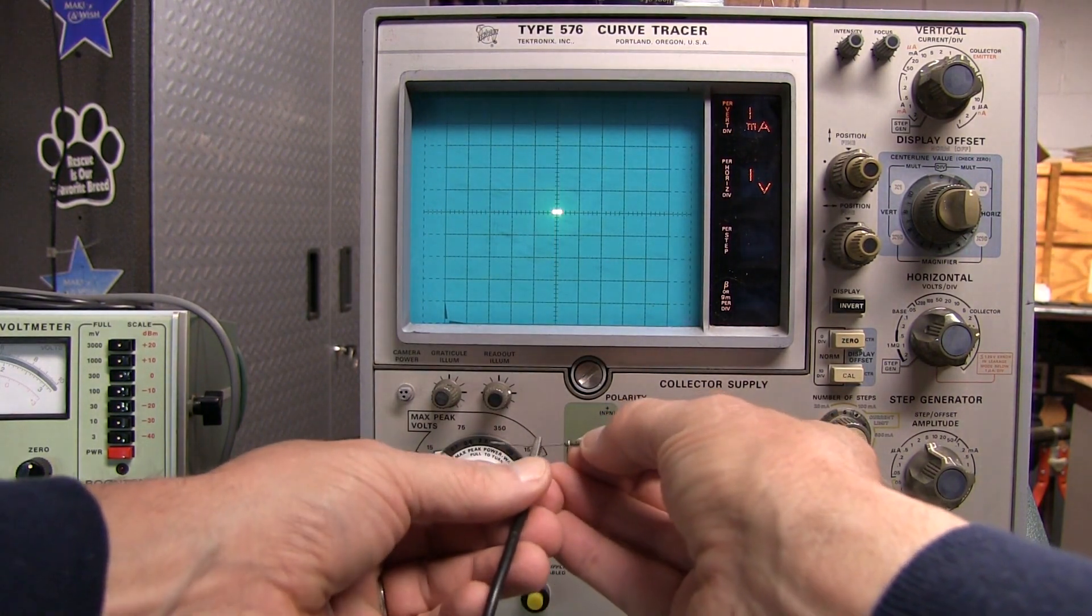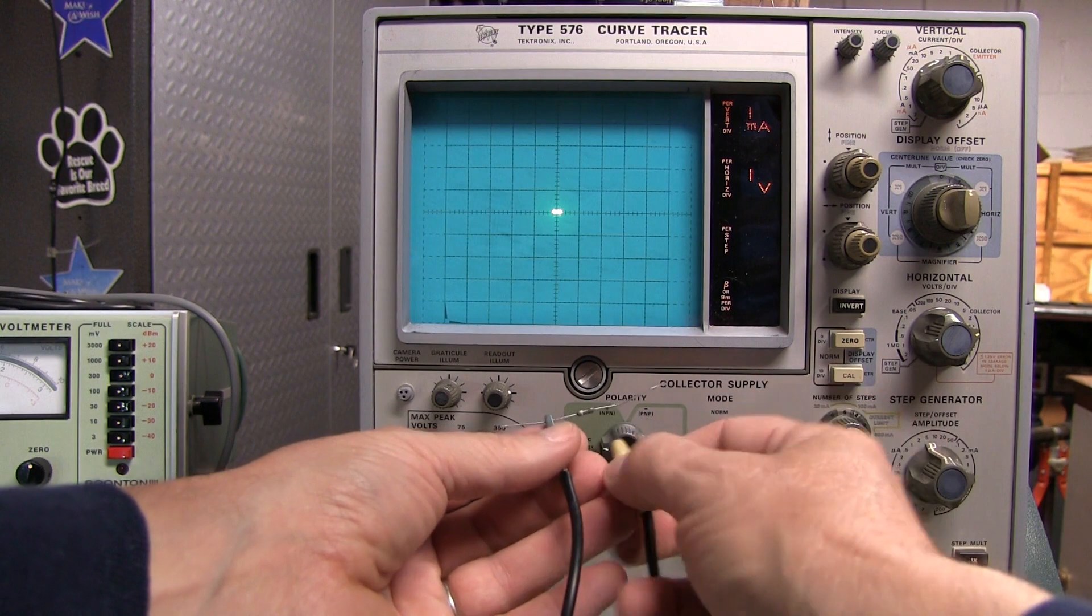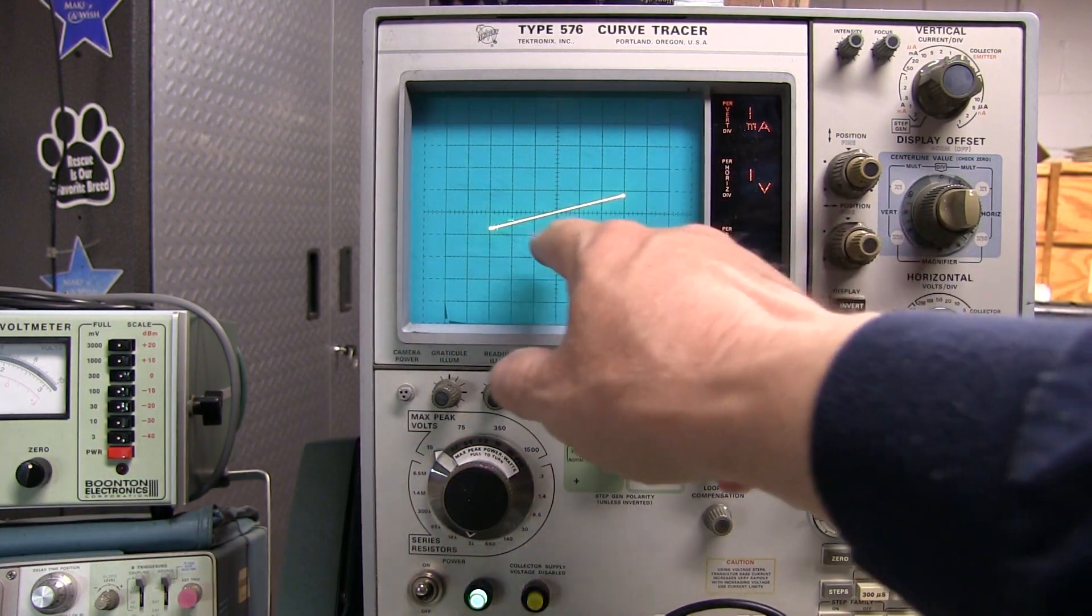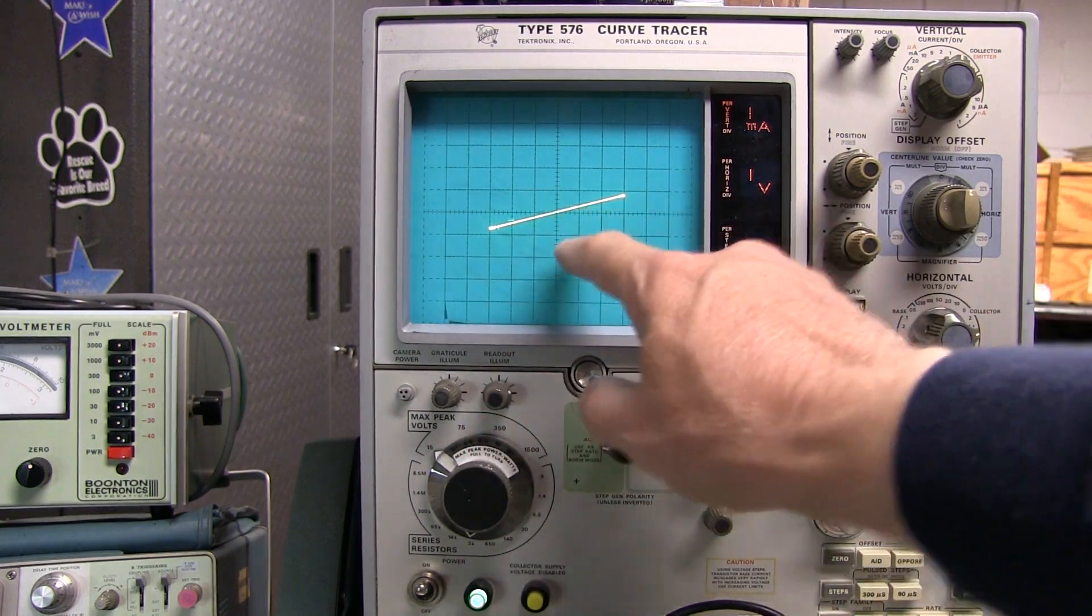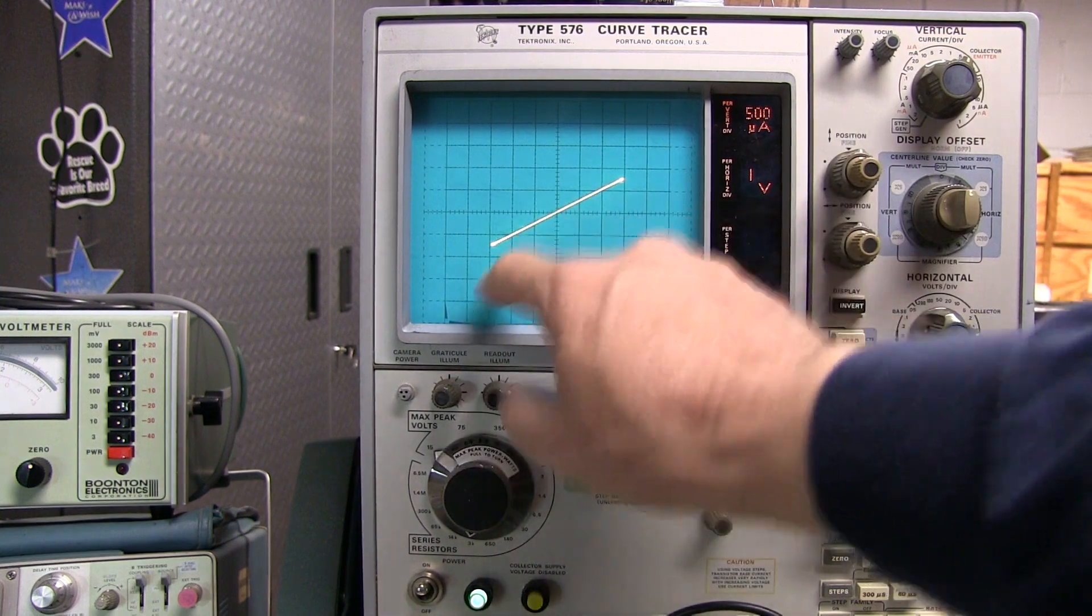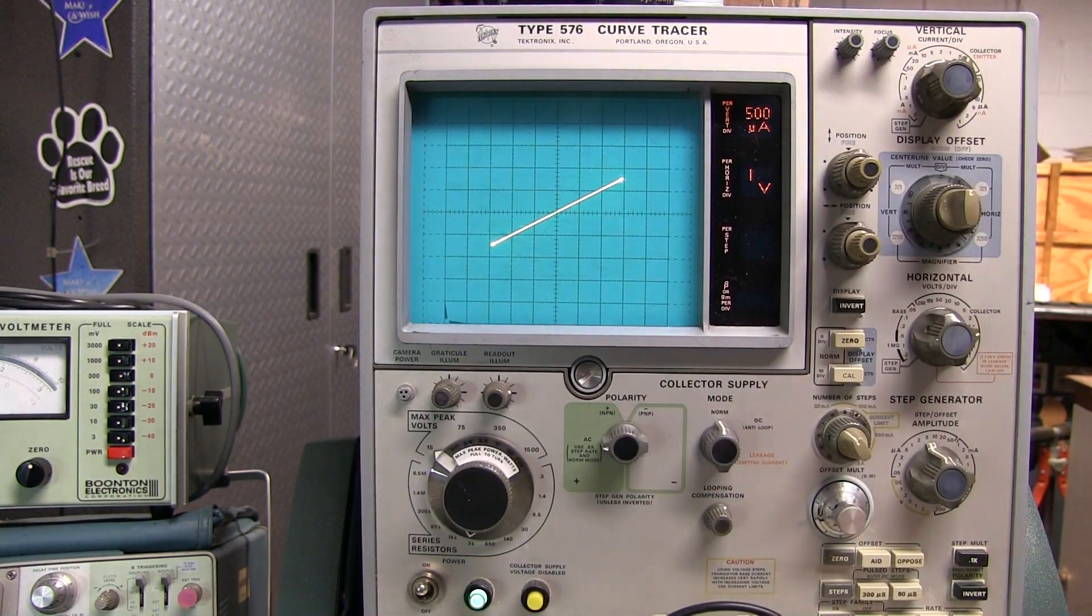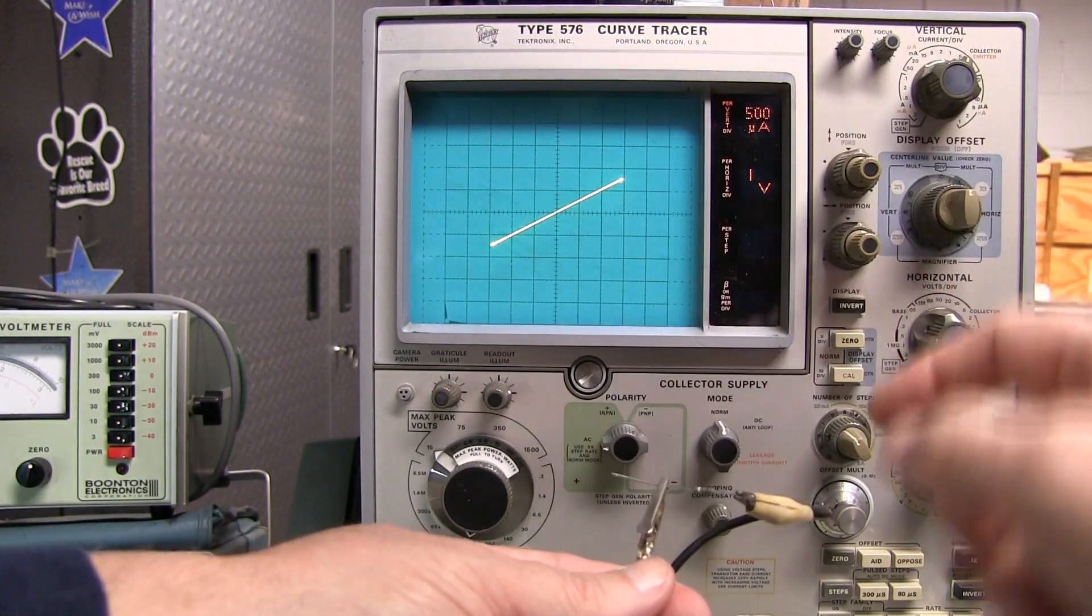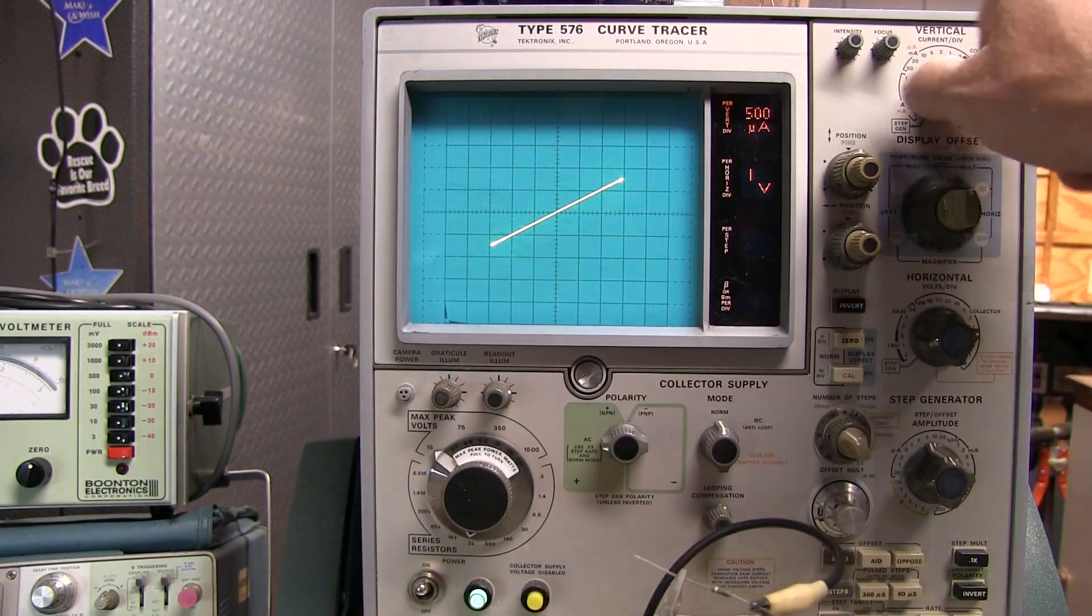If we connect up a fixed resistor as our device under test, we expect that to show as a tilted or slanted line, because a linear change in voltage is a linear change in current, and we can change the slope of that. And of course, the slope of that line is proportional to the resistor value. The larger the resistor, the flatter the line. The smaller the value of the resistor, the steeper the line.